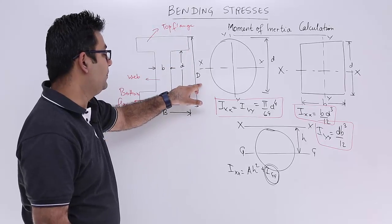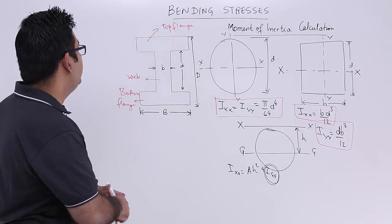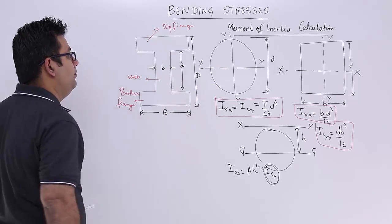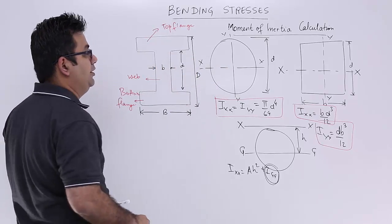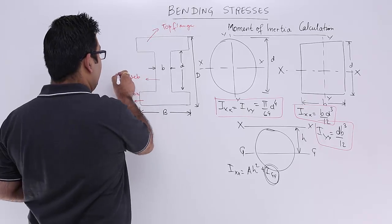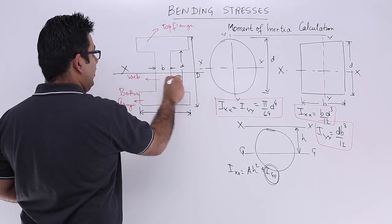The entire depth is capital D, and then you take out this portion and that portion, you get a web of thickness b and this height is small d. So if you find out the moment of inertia of this about the centroidal axis.